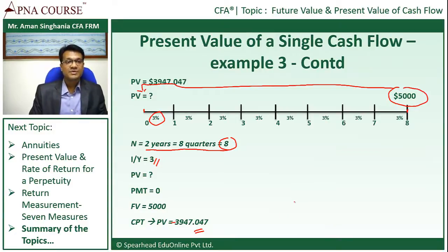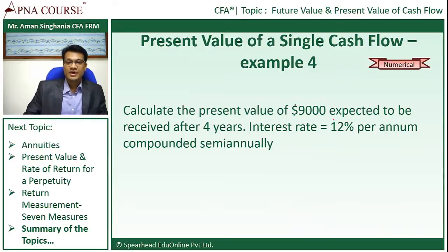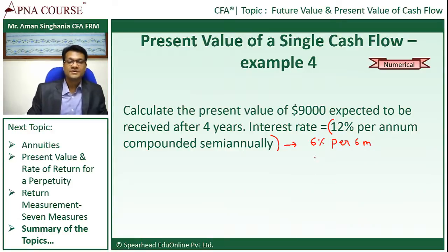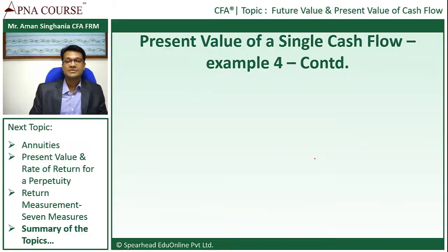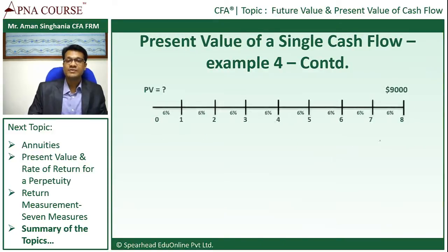Let's take another example. Calculate the present value of $9,000 expected to be received after 4 years. The interest rate is 12% per annum compounded semi-annually. Now, 12% per annum compounded semi-annually is nothing but 6% per 6 months. Drawing the timeline, 4 years is equivalent to 8 periods of 6 months each.